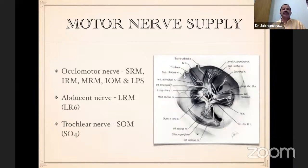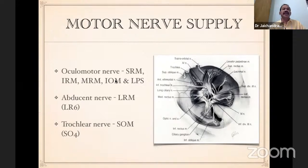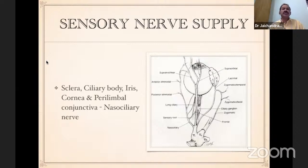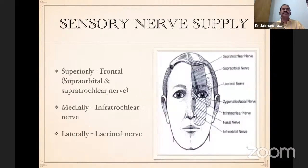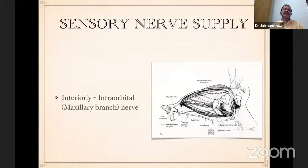Coming to the nerve supply — motor nerve supply: most extraocular muscles are supplied by the third cranial nerve, the oculomotor nerve. Remember the mnemonic LR6 and SO4: LR6 stands for lateral rectus, supplied by the sixth cranial nerve (abducent), and SO4 is superior oblique, supplied by the trochlear nerve. All other motor supply comes from the third cranial nerve. For sensory supply: most of the sclera, ciliary body, iris, cornea, and perilimbal conjunctiva are supplied through the nasociliary nerve, the ophthalmic branch of the trigeminal nerve. Superiorly it is the frontal nerve (supraorbital and supratrochlear branches), medially by the infratrochlear nerve, laterally by the lacrimal nerve, and inferiorly by the infraorbital — the maxillary branch of the trigeminal nerve.